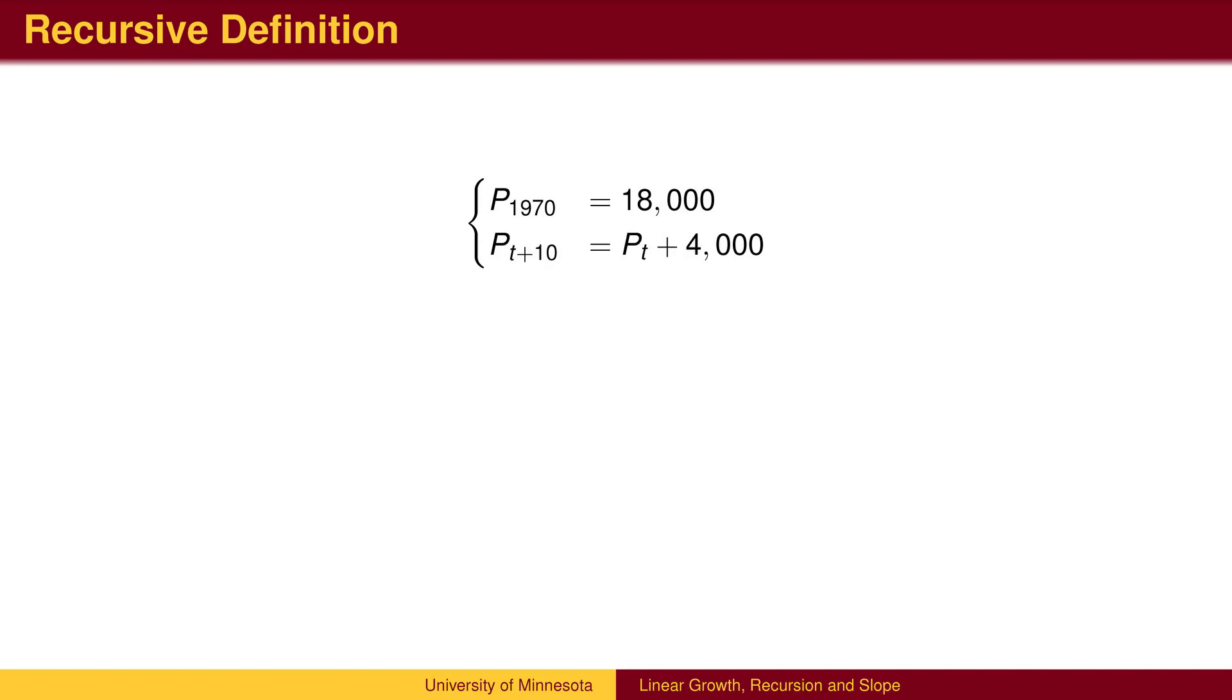One way to represent the pattern of growth is with a recursive definition. We specify a starting condition and a recursion that tells us how to find future members of the sequence based on earlier members of the sequence. In this example, we begin with a 1970 population of 18,000.